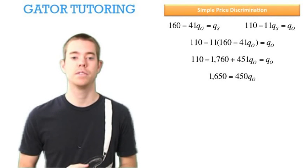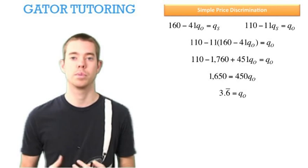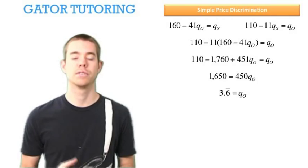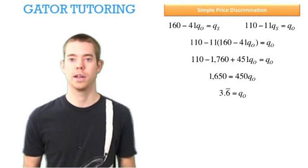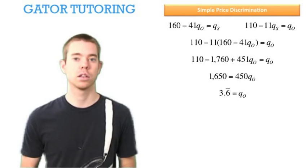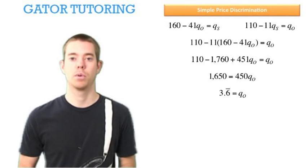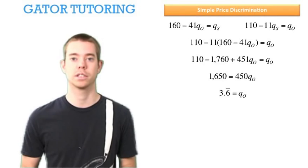We get 1650 = 450QO. Dividing through by 450 we see that QO = 3.666 repeating. In these problem sets, it's very important not to round because it will give you a wrong answer. Hold out to at least five or six decimals. If you're getting really close and just barely missing by one integer, it's probably a rounding error.